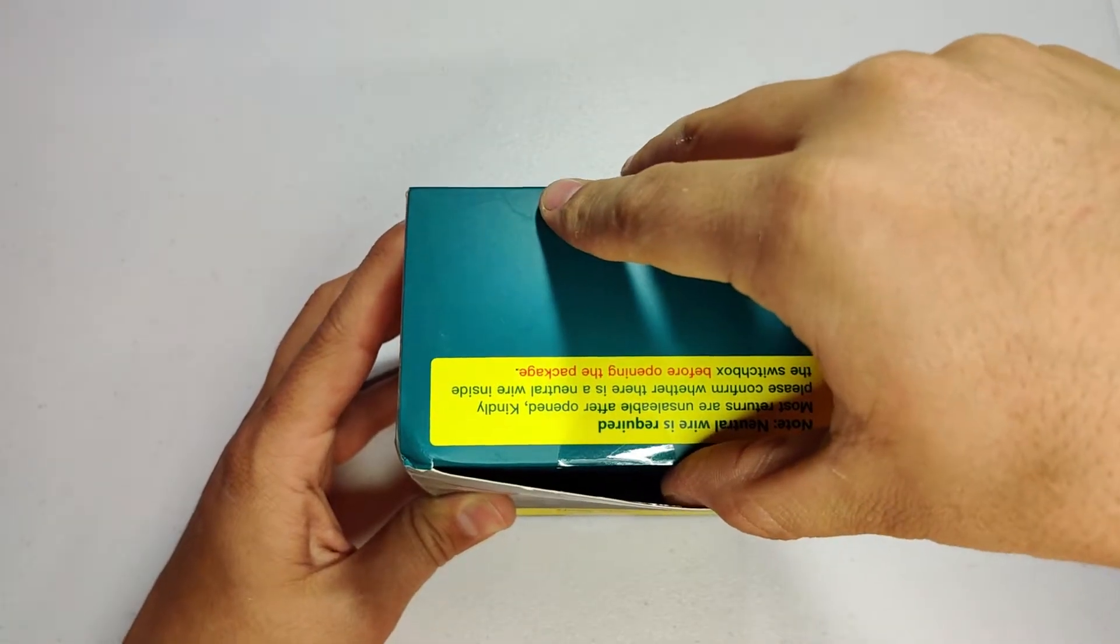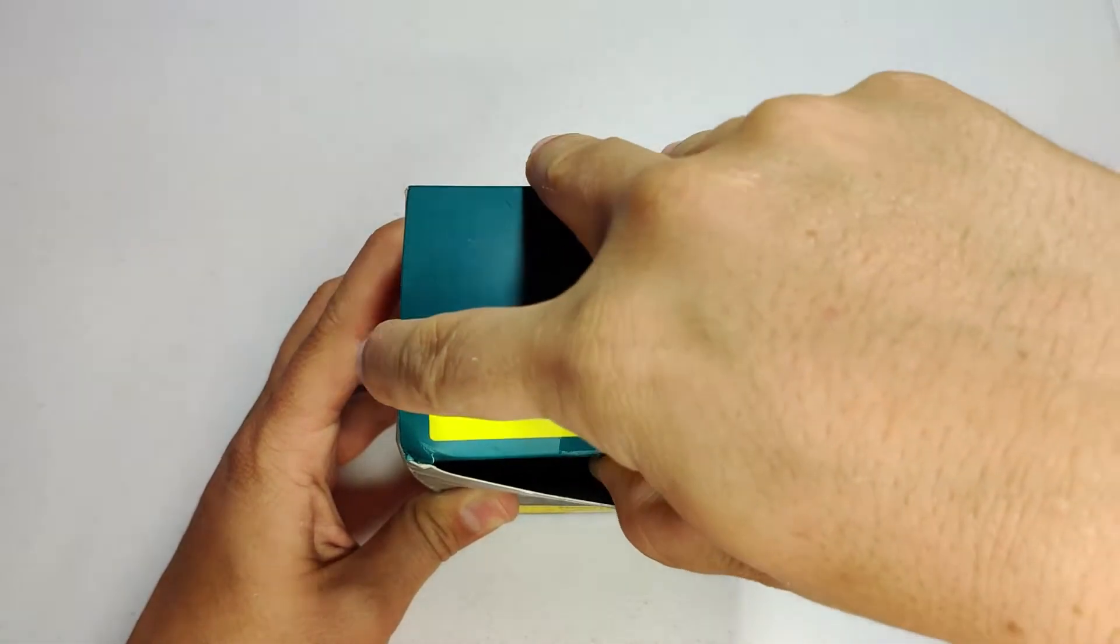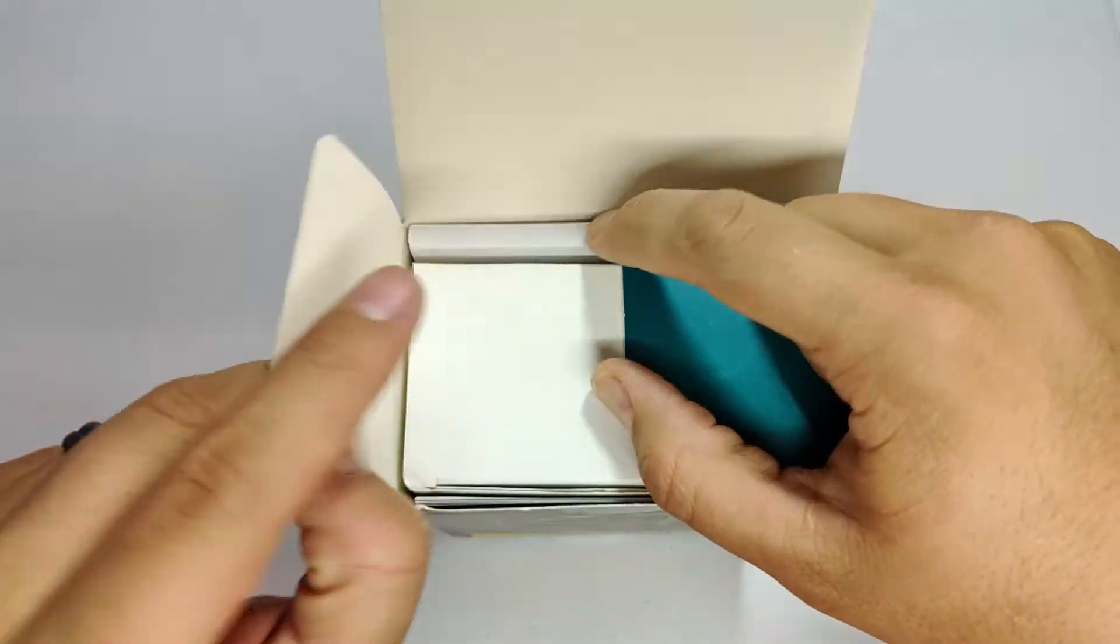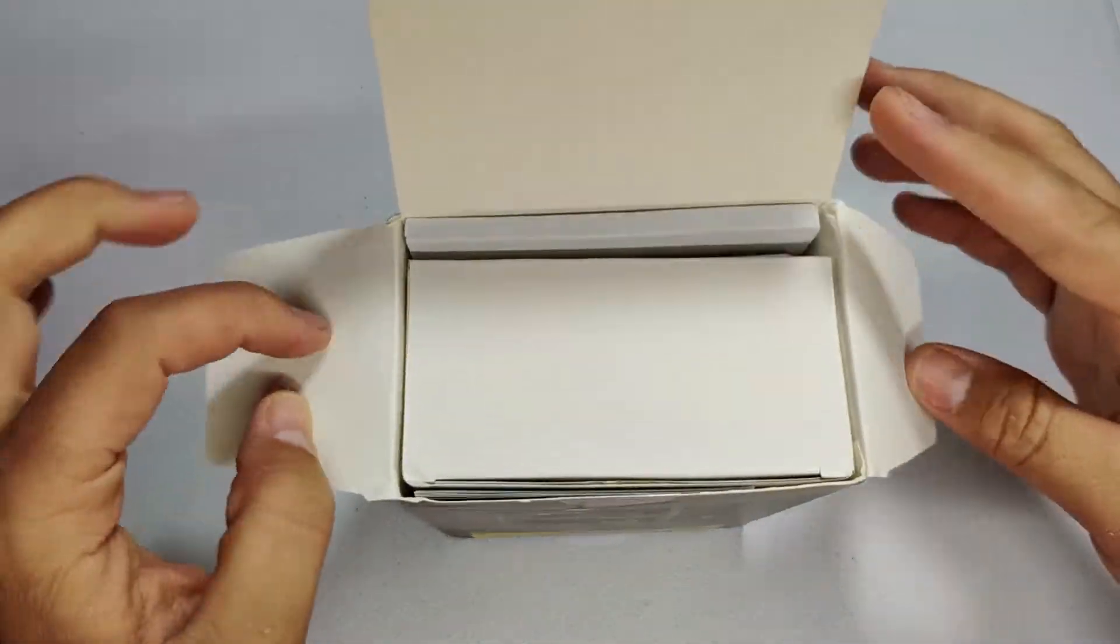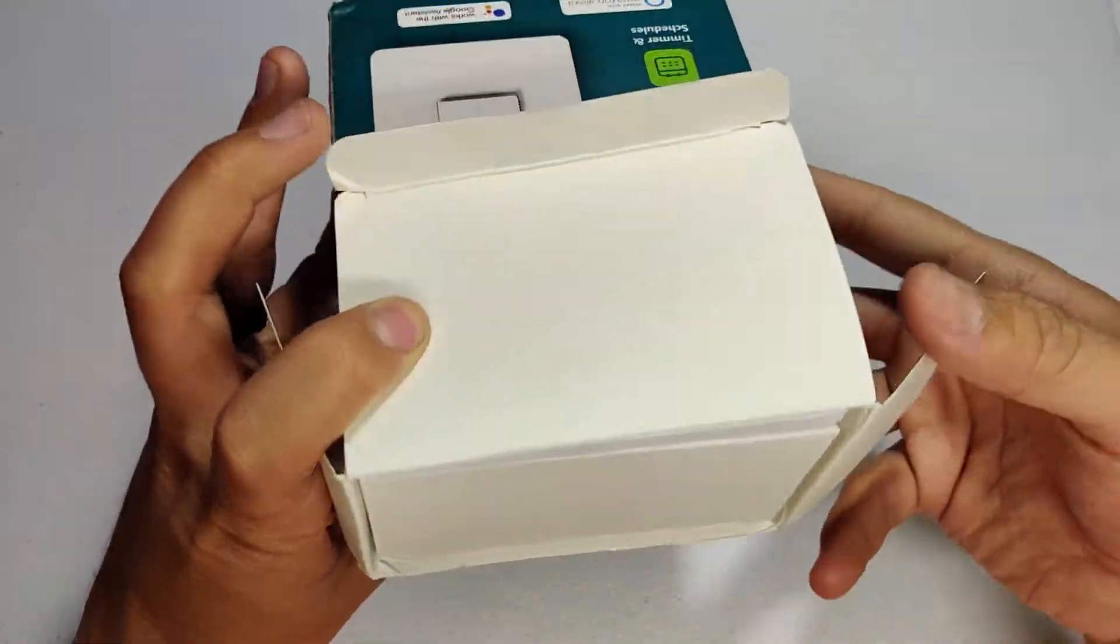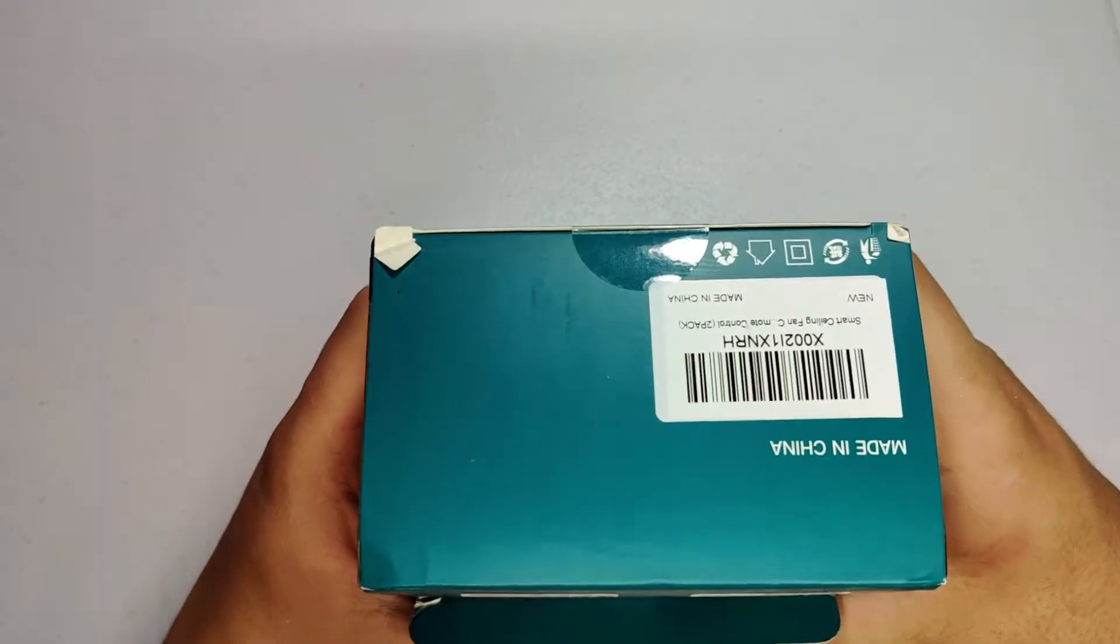Hey guys, today we're going to look at this ceiling fan and light dimmer switch from TreatLife. This nifty little switch can control the speed of your ceiling fan and the brightness of the fan light, all in one switch.